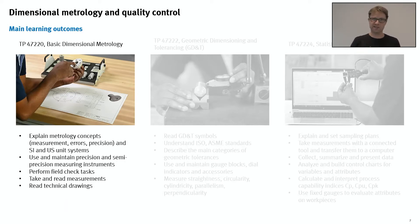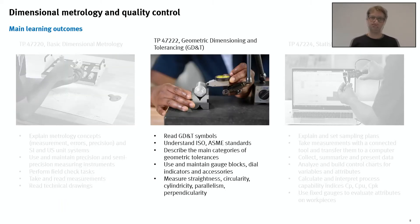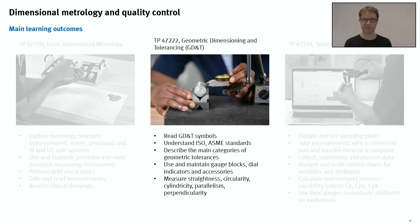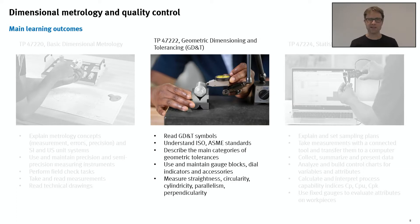Students must also read technical drawings. For the second package, Geometric Dimensioning and Tolerancing, we focus on reading the GD&T symbols, understanding the differences between ISO and ASME standards, and describing the categories of geometric tolerances. Students use gauge blocks, dial indicators, and various accessories. They measure straightness, circularity, cylindricity, parallelism, and perpendicularity, among others.